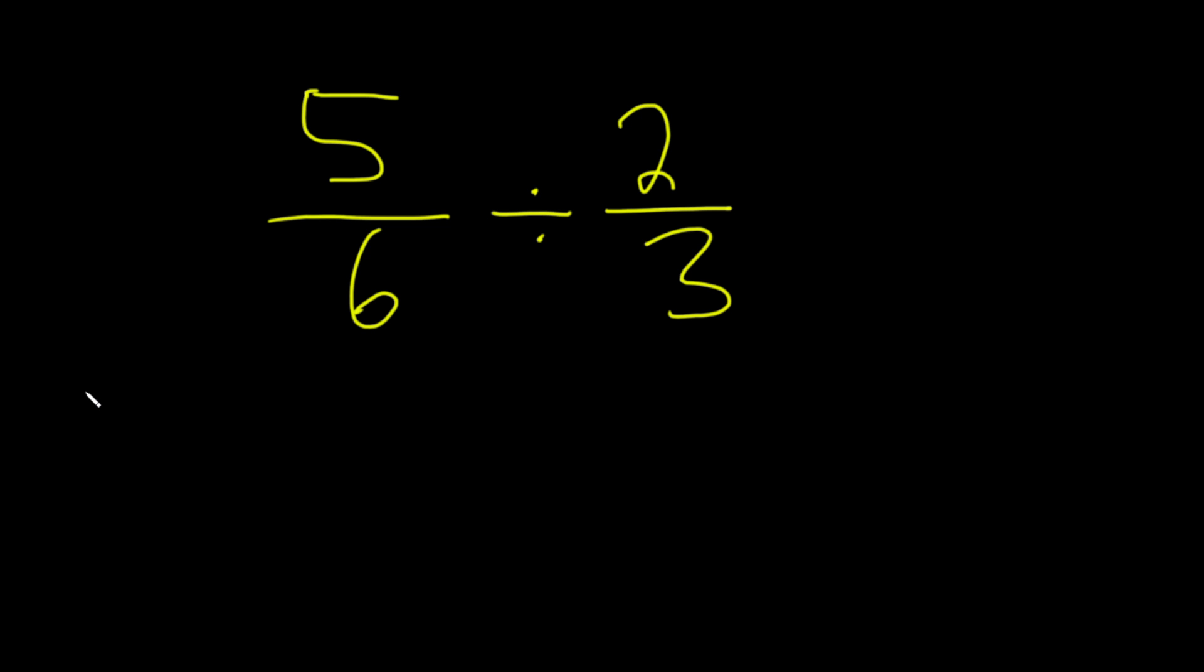So the very first thing you want to do when you see a problem like this is just write down the left hand side again, replace this mystical division symbol with a times, and then flip this, right?